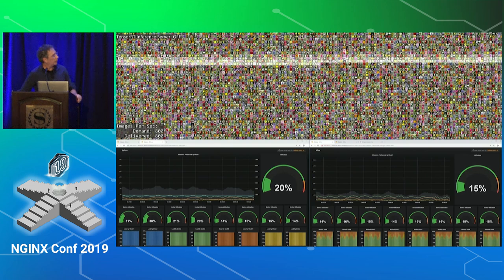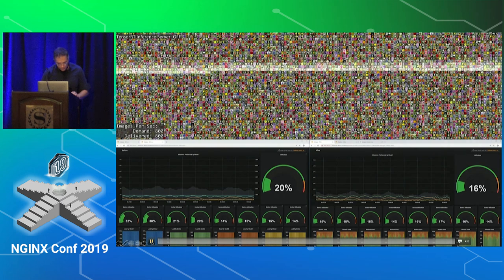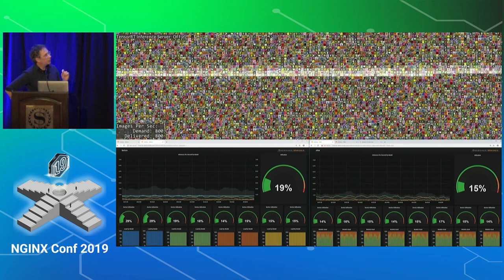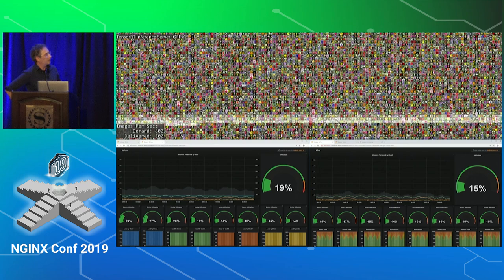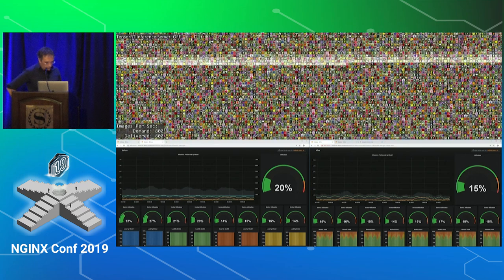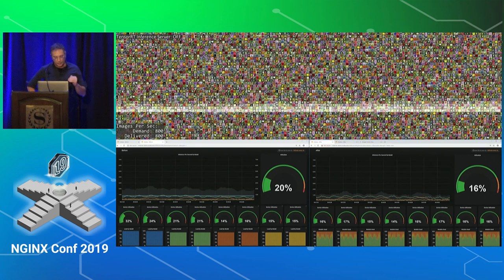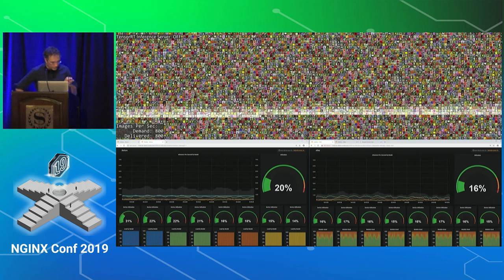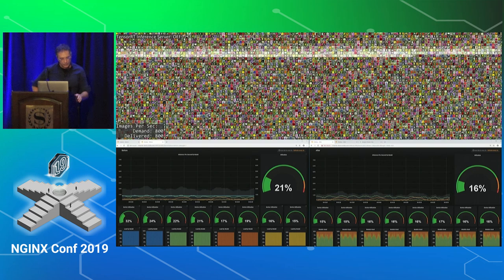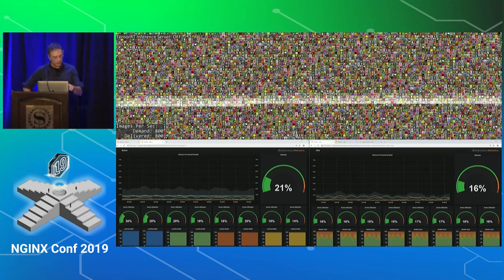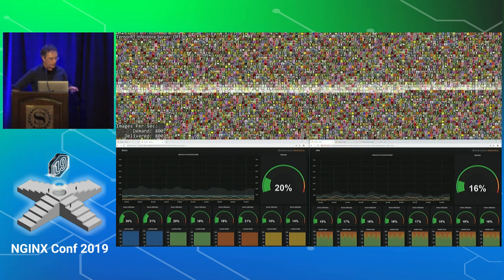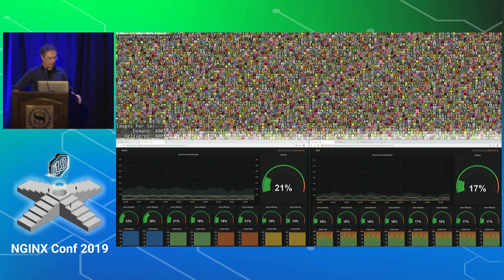Here is a demo video. This is our flower demo. On the top, every single small image is a type of flower. The flashing bar represents inference requests sent to the system. We currently have 800 images per second being requested, and right now we have delivered 800 inference results per second, so we are matching the demand.